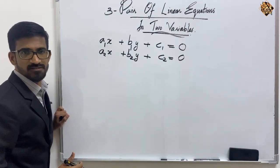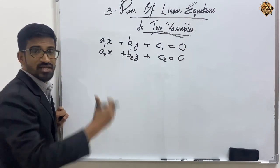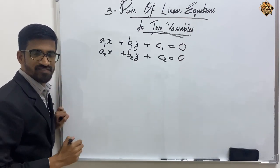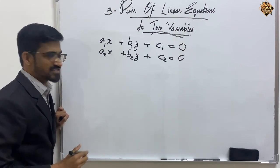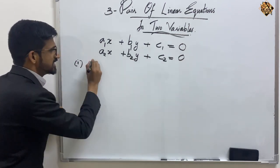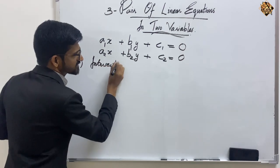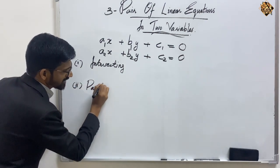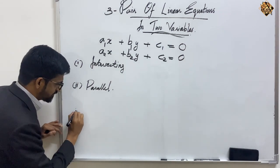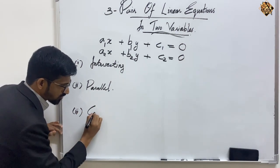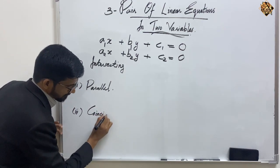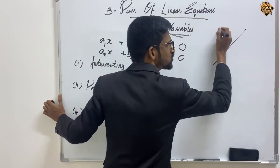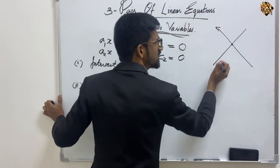Since these are linear equations, each equation represents a line. So when we have two lines, there are three possibilities: the lines will be intersecting, or the lines will be parallel, or the lines will be coincident. If the lines are intersecting, it means two lines intersect at exactly one point.